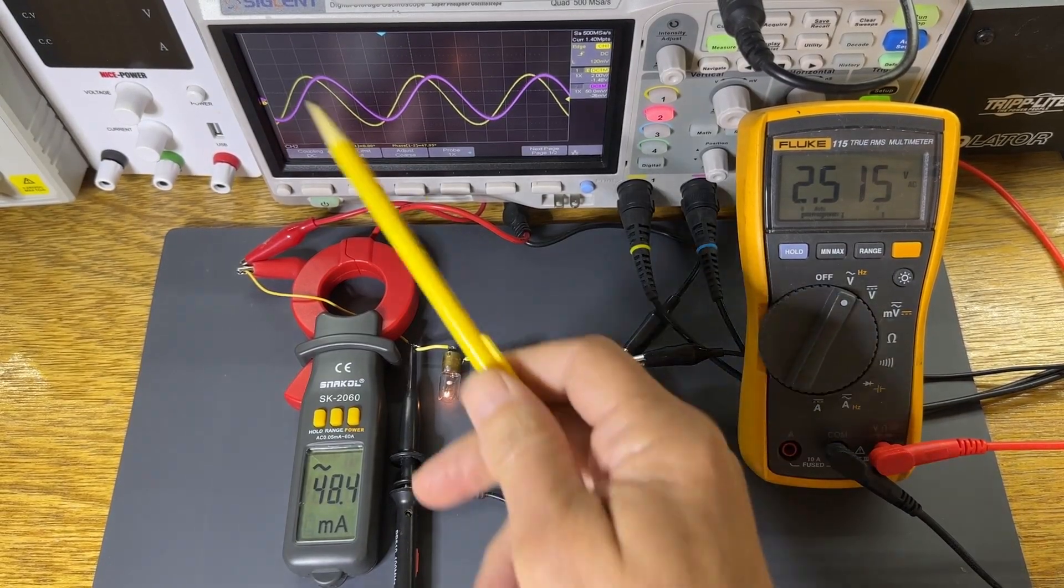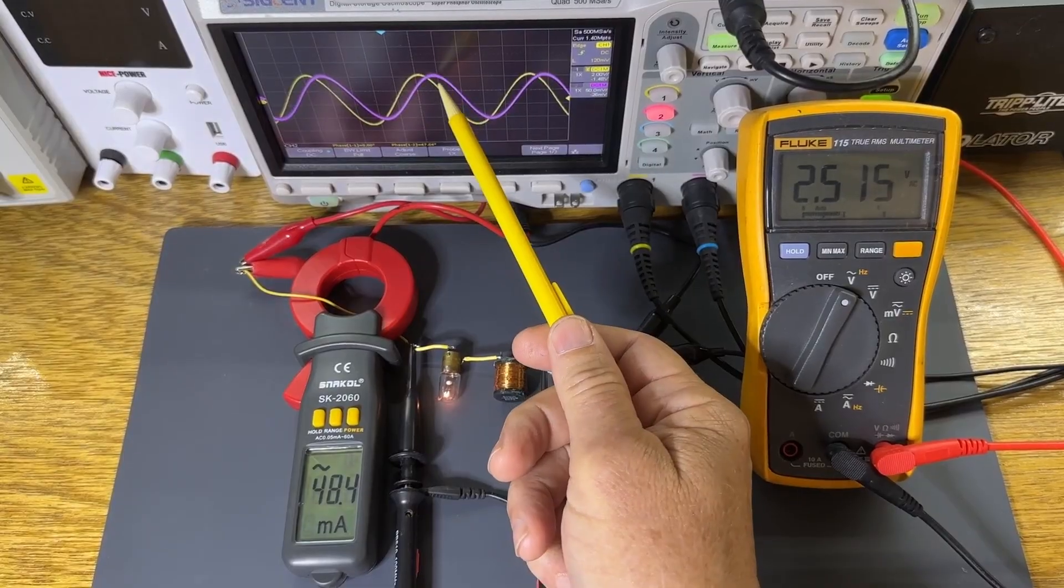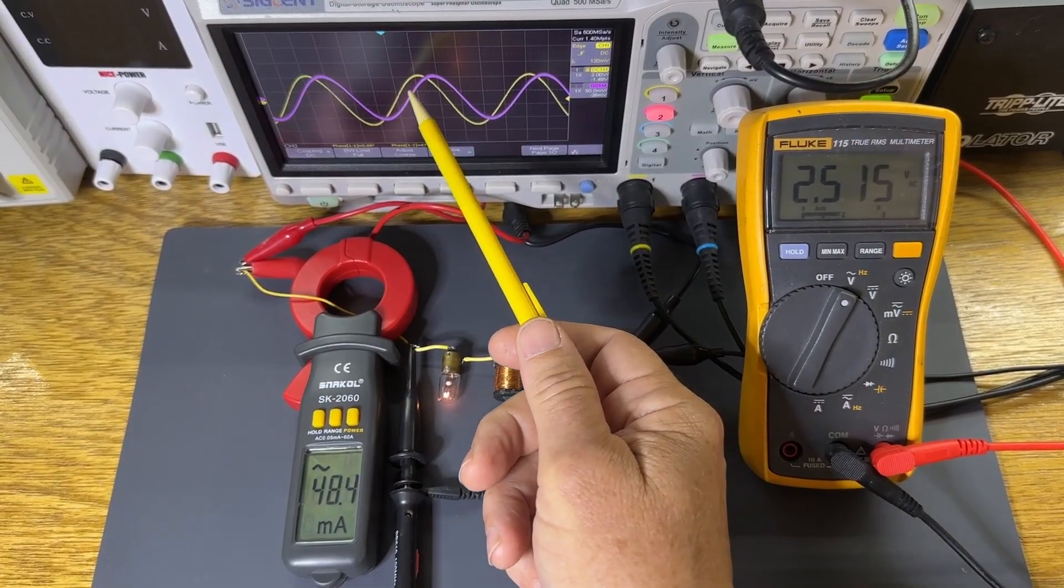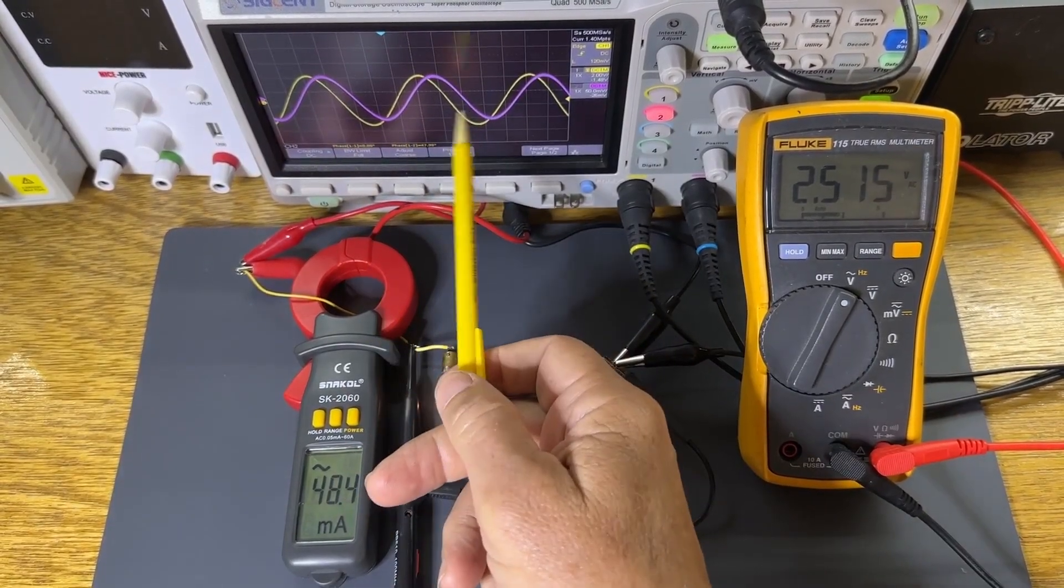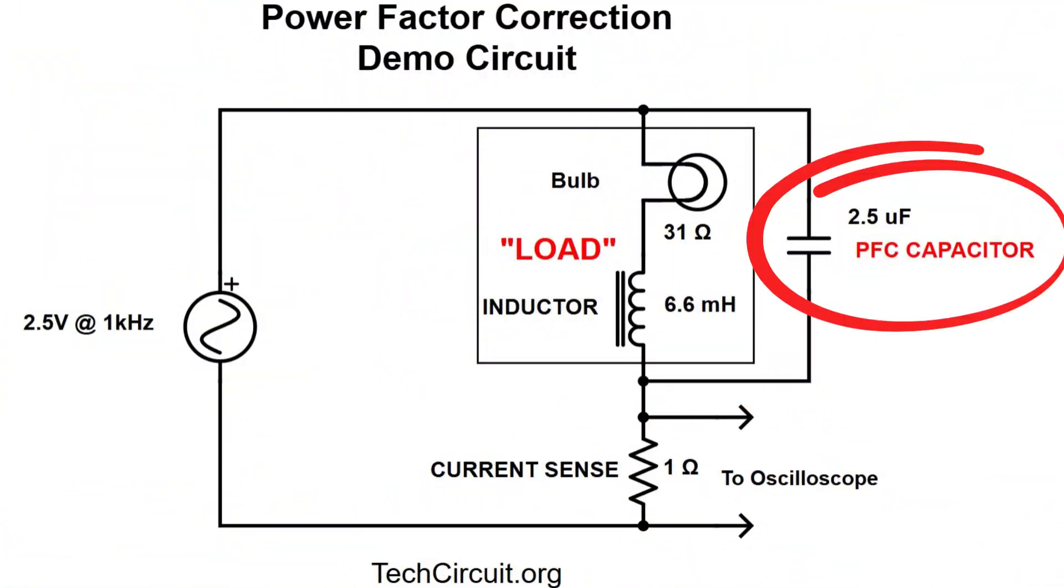That's the capacitor we'll connect across the load to neutralize that lagging reactive current and bring the power factor up to nearly 1.0. So we'll put that value capacitor in parallel with the load as shown in this schematic.